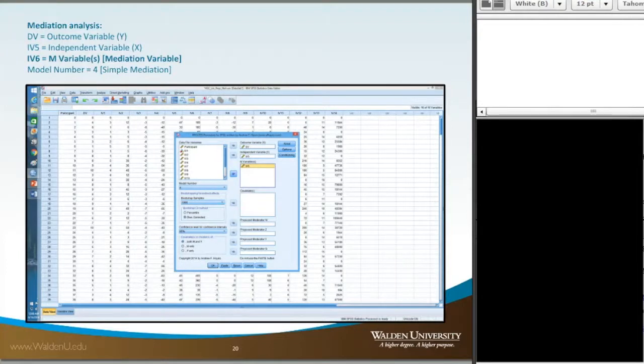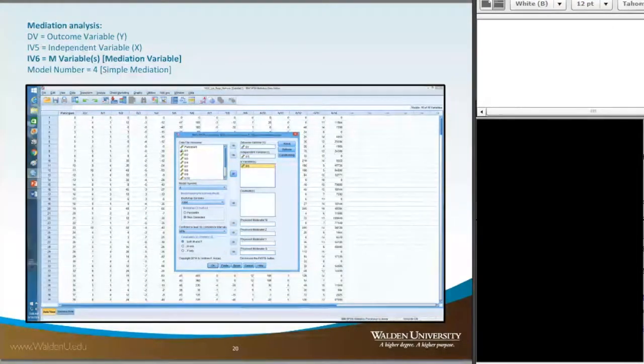Now, to run mediation, we go through the SPSS Analyze Regression Process Software again. This time, for mediation, we're going to keep our DV as our outcome variable. This time, I'm going to use variable number 5 for the independent variable, and I'm going to use variable number 6 for my mediation variable.